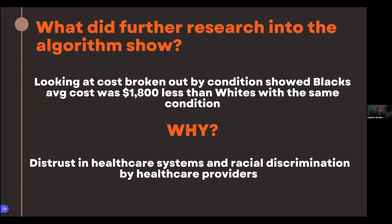Further research showed that when you look at cost broken out by condition — stroke, heart attack, diabetes — Black patients' average cost was $1,800 less than white patients with the same condition. Why? There is distrust in the healthcare system for minorities, as well as fear of racial discrimination by healthcare providers. It doesn't mean they don't need healthcare — it means they have had a bad experience with the healthcare system, and that is why the cost they spend can appear less than that of a white patient.